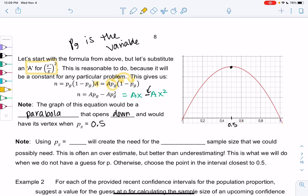The graph is a parabola that opens down. The down is because the X-squared term is negative. It ends up having a vertex at 0.5. Even if you don't know what this is, you can visually see at 0.5, that's the peak of the graph. It turns out that P of 0.5 is our safe guess. If we use 0.5, this creates the largest possible value. Think about N being the vertical on this graph. If we use 0.5, this is the largest sample size possibly needed. This is often an overestimate, but it's much better than underestimating. We will use 0.5 when we do not have a guess. Otherwise, we're going to choose the point that is closest to 0.5.